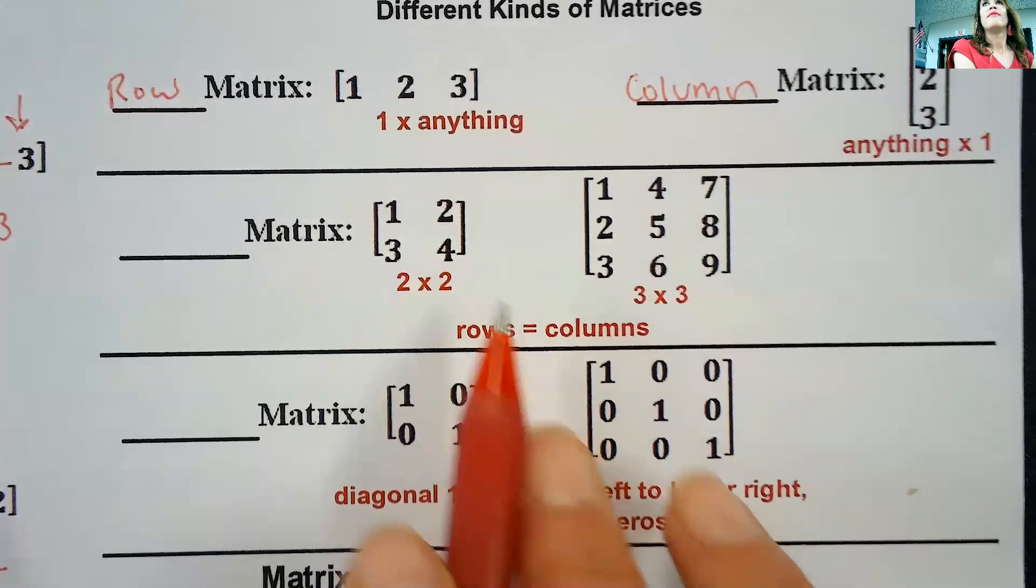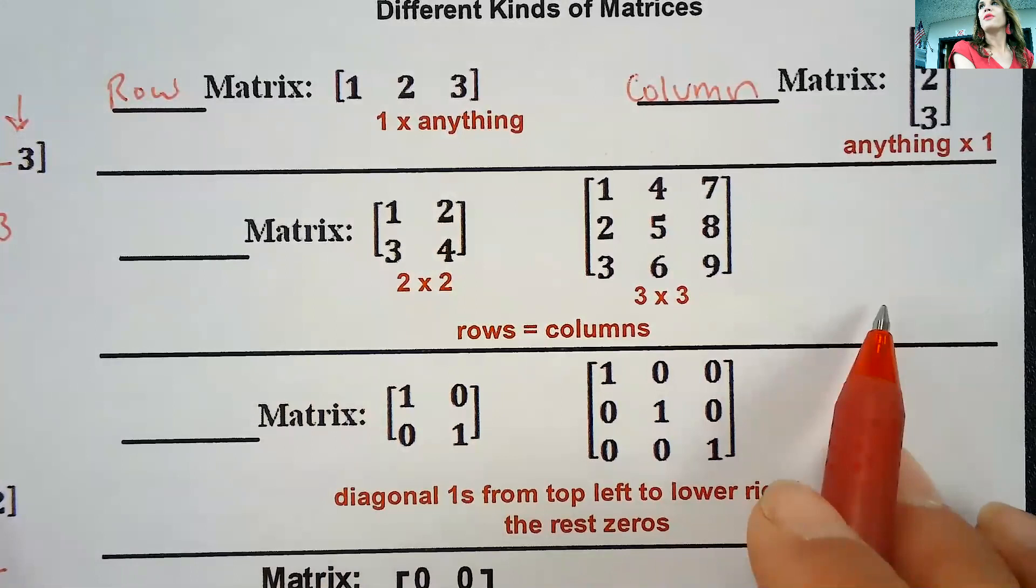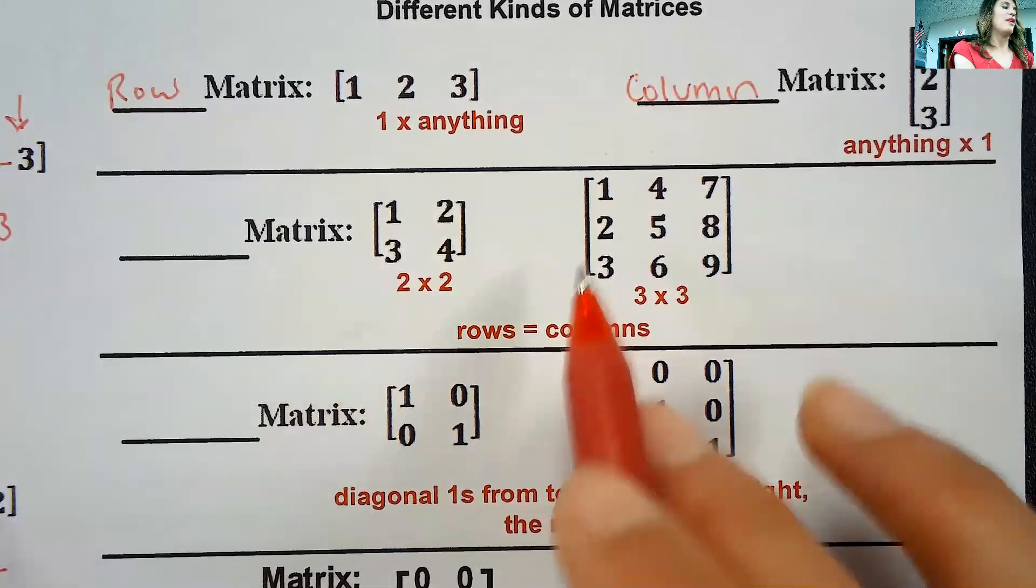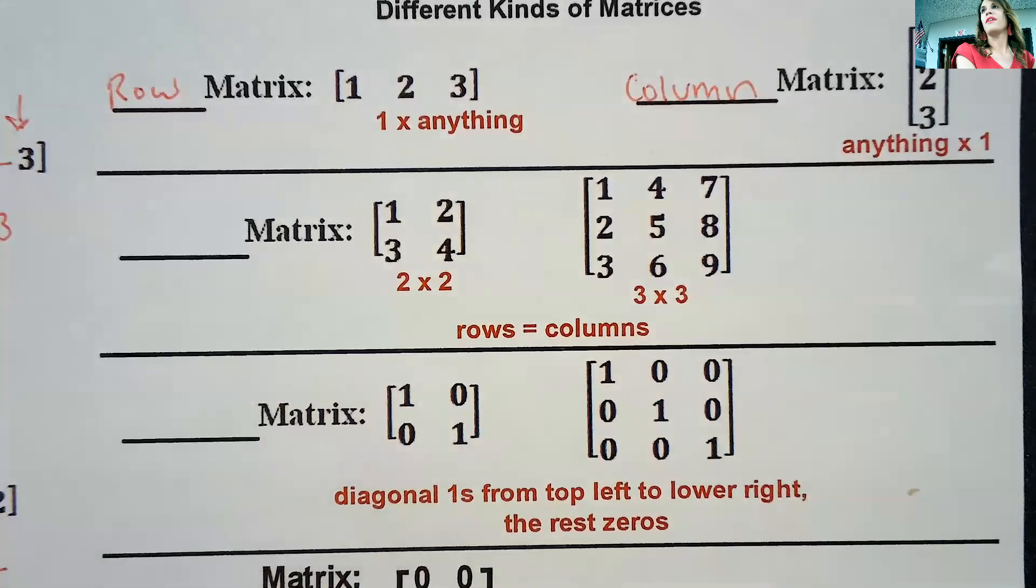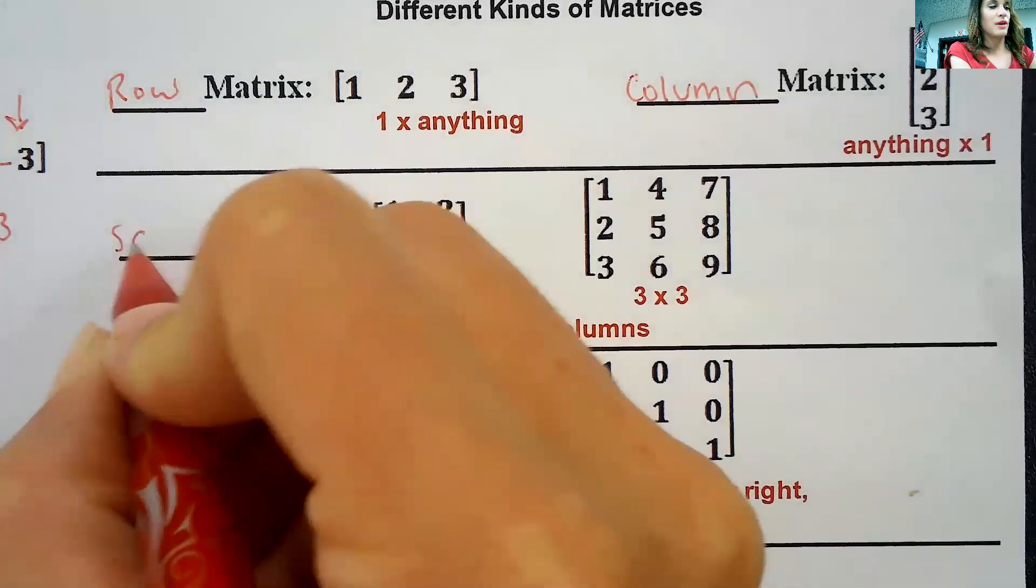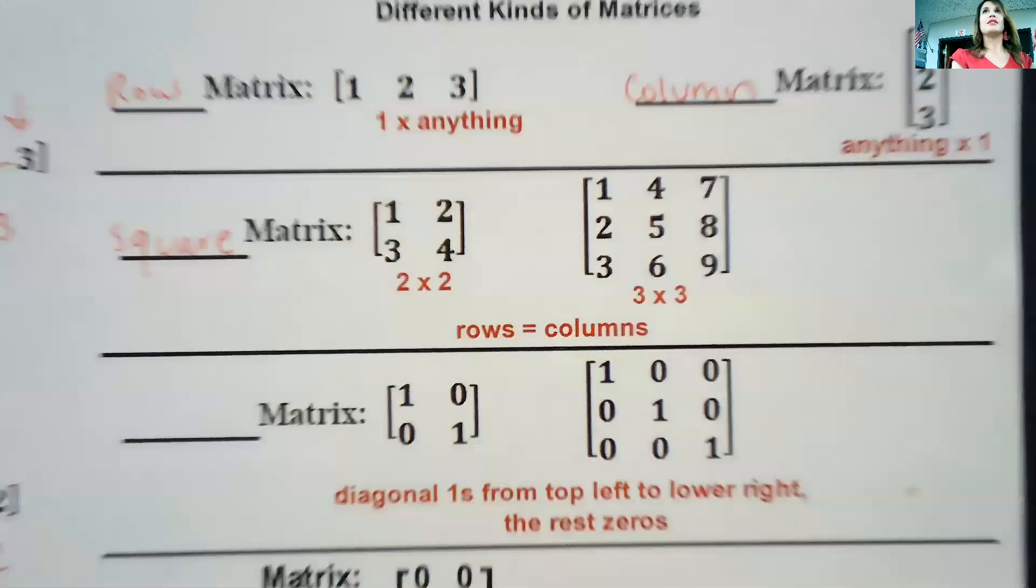Okay, so we got a row matrix and a column matrix. What genius thing do you think they call that if it's a two by two or three by three or four by four, or so on? Could you guys come up with it? What would you call that? That one's two by two, this one's three by three. What if it was a four by four or five by five or 25 by 25? No, you wouldn't call it a square. I would call it a square. It is a square matrix.